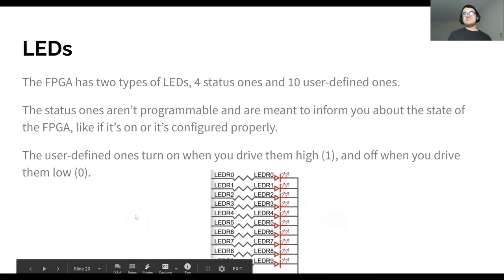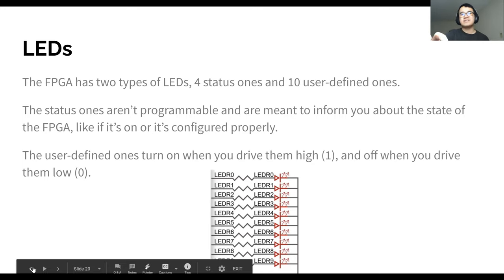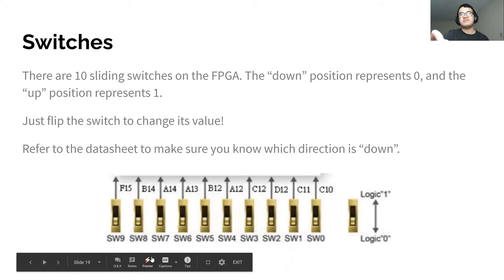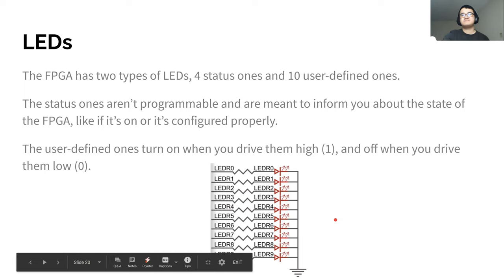There are 10 switches on the FPGA — they do exactly what you'd think. If they're down it's zero, if it's up it's one. Check the data sheet to confirm which direction is which. The FPGA also has 10 user-defined LEDs that you can control and program, plus four status LEDs that confirm your FPGA is in the correct state. The user-defined LEDs are just above the switches. When you set an LED high it turns on; when you set it low it turns off.